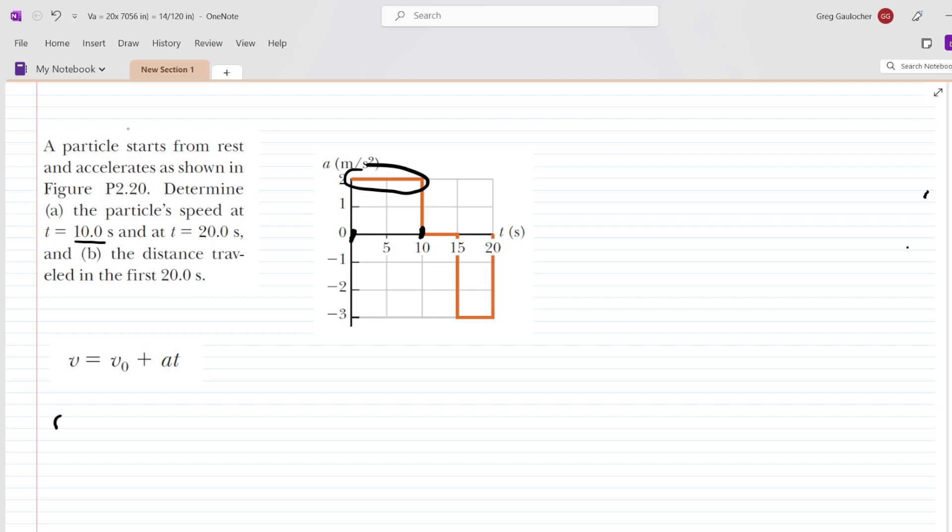So we're just going to write that interval down. That interval was between 0 and 10 seconds, and during that time interval, the acceleration according to the graph is 2 meters per second squared. We also know that the particle started from rest, so this means that the initial velocity of the particle is 0 meters per second.